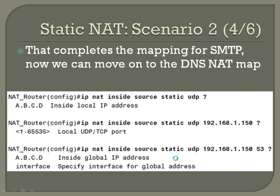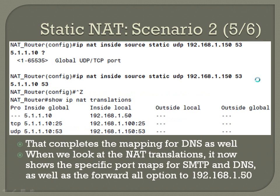That completes the mappings for SMTP. Now we move on to the DNS NAT map. Same kind of configuration, IP NAT inside source static, however in this case since it's DNS we select UDP, since it's using UDP port 53. Final statement: IP NAT inside source static UDP 192.168.1.150 port 53 5.1.1.10 port 53. Control Z, and show IP NAT translations. You can see the original translations we already had for everything and port 25, and then this new one for UDP port 53 mapping from the global address to the inside local.